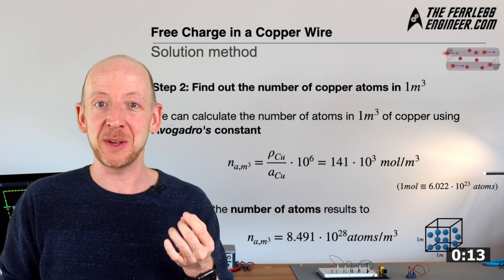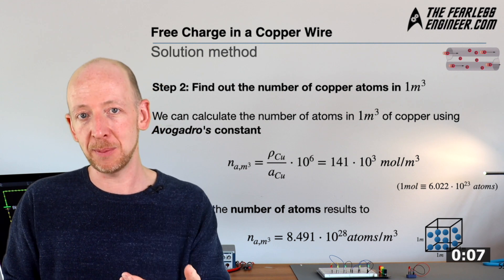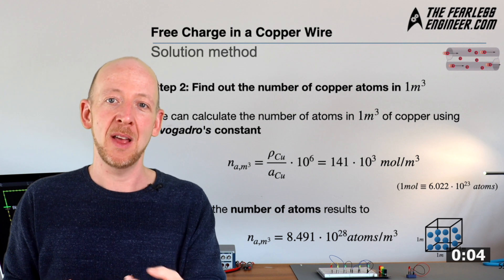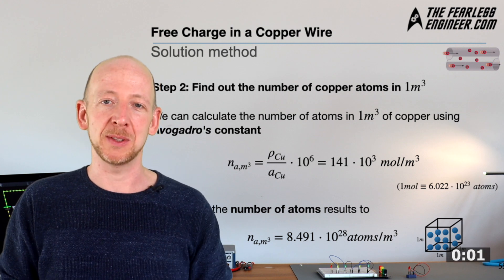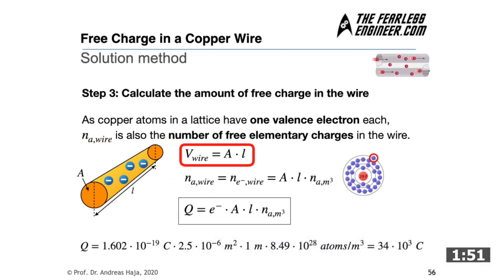And next we calculate how many free electrons we actually have in our copper cable. And to do this we only have to multiply the charge carrier density from the last step, that is the number of electrons per cubic meter of copper, by the volume of the wire which is given in cubic meters. Our piece of wire can best be described as a lengthy cylinder with a cross-sectional area A and the length L. And the volume of the wire is then simply A times L. And if we multiply this by the charge carrier density we have the number of free electrons in our wire. So we write down A times L times Na, and now we are almost finished because our goal is to calculate the total amount of free charge in the wire. And since we now already know how many free electrons there are, we only have to multiply this number by the elementary charge.